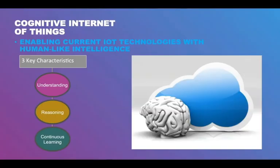Cognitive IoT is about enabling current IoT technologies with human-like intelligence. The end goal is to provide expert advice based on the domains being targeted. Cognitive IoT has three key features. Basically, the system understands the domain like a human does.